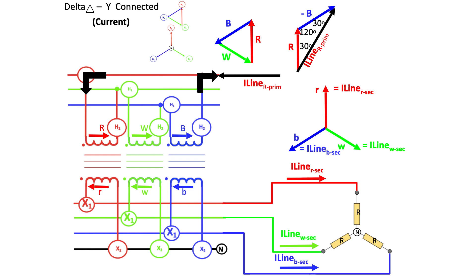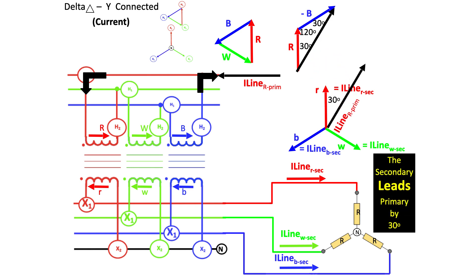Comparing it to the line currents of the secondary, it can be seen that the secondary will lead the primary by 30 degrees. That is, the secondary line currents will be leading the primary line currents by 30 degrees.